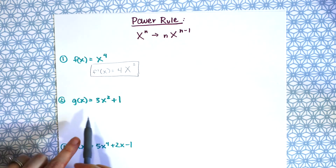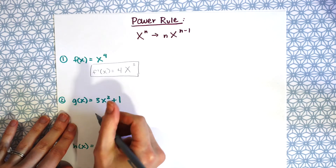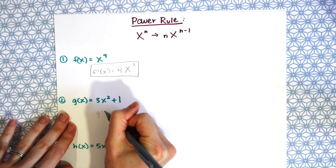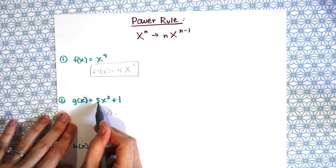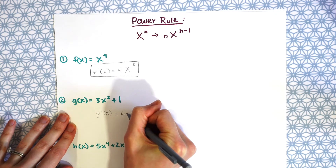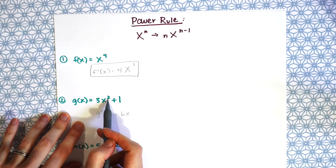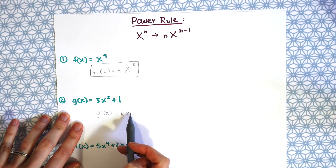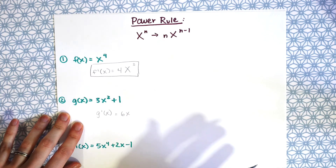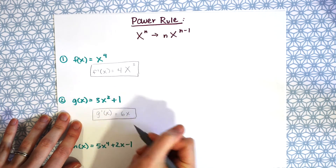For the second example, we have g of x equals 3x squared plus 1. We write g prime of x and do the same thing: bring down the 2, multiply by the 3 in front to get 6x. Then we subtract 1 from the exponent, giving us just x to the first power. The constant 1 becomes 0, so our final answer is 6x.